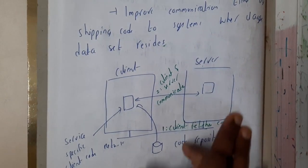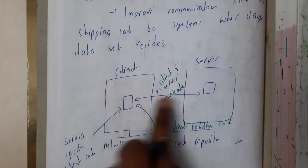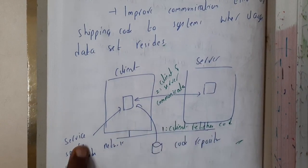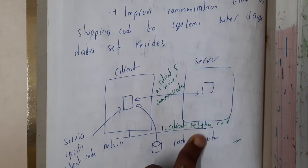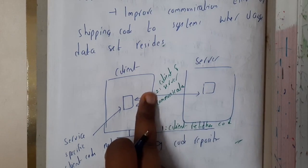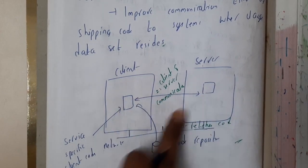If you draw a small diagram, it will be this way. Here we have a client and here we have a server. This is our network. Initially, the client fetches code. Here we have this client and server communication where they are communicating.